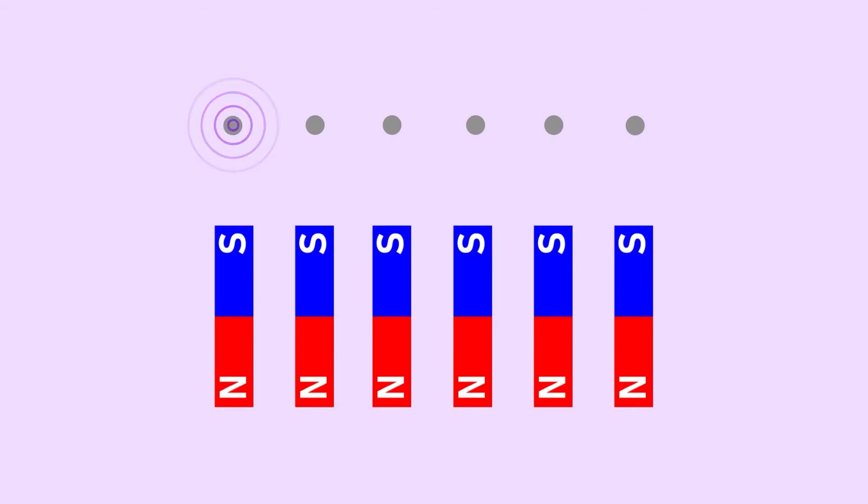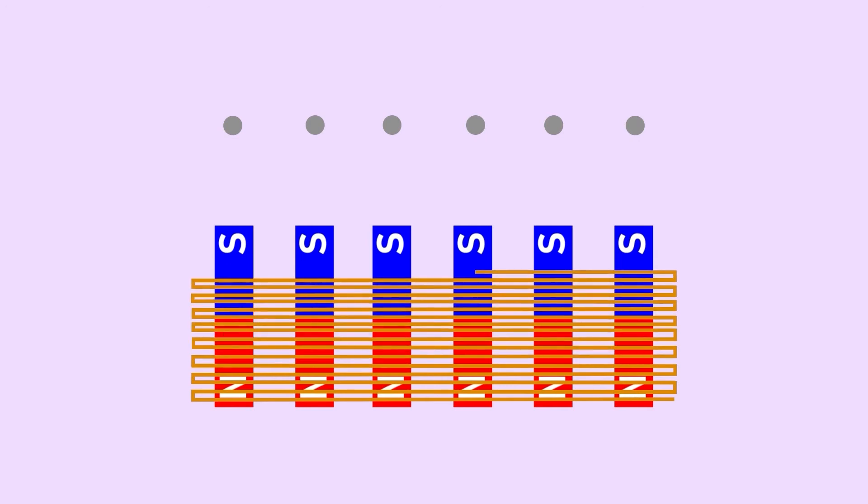You see, underneath each of the guitar's strings is a cylindrical magnetic pole, and these are coiled together with a very thin copper wire.